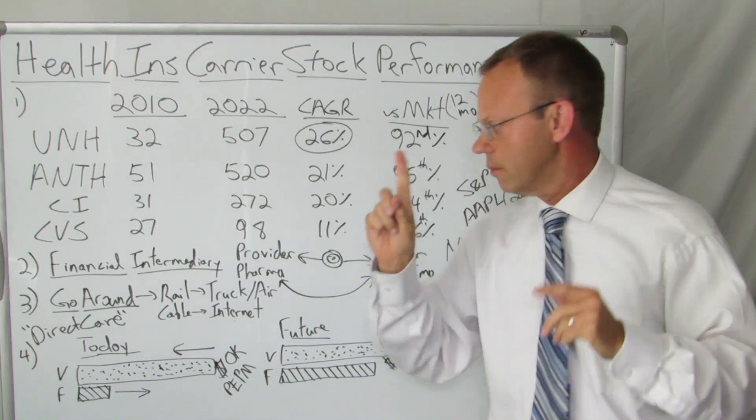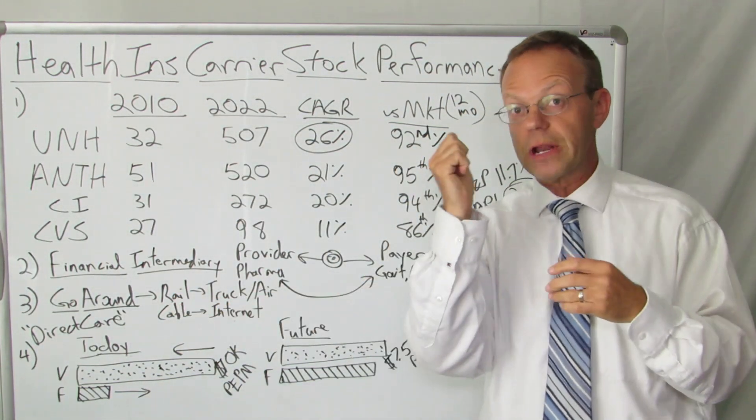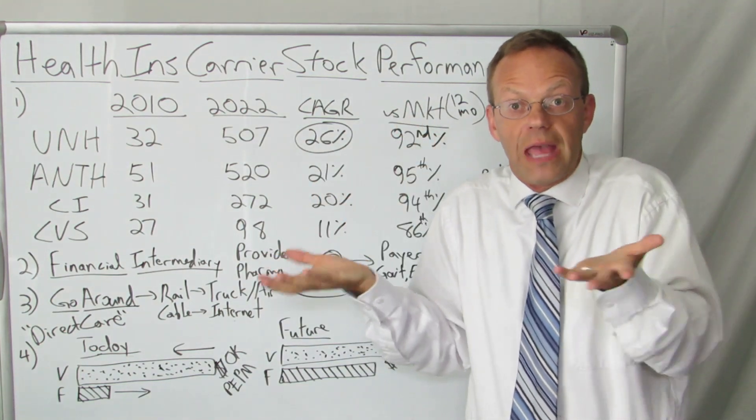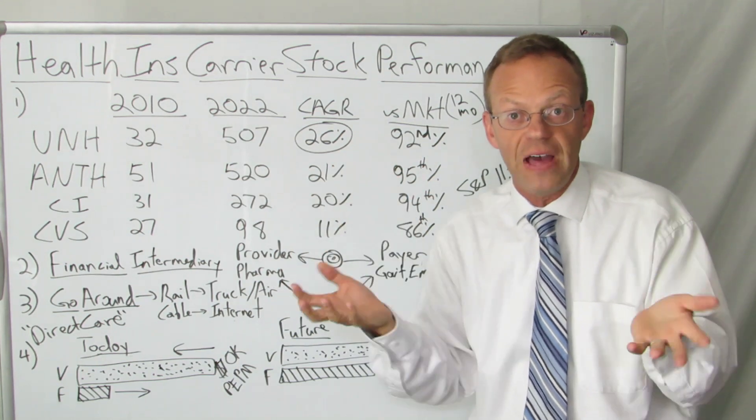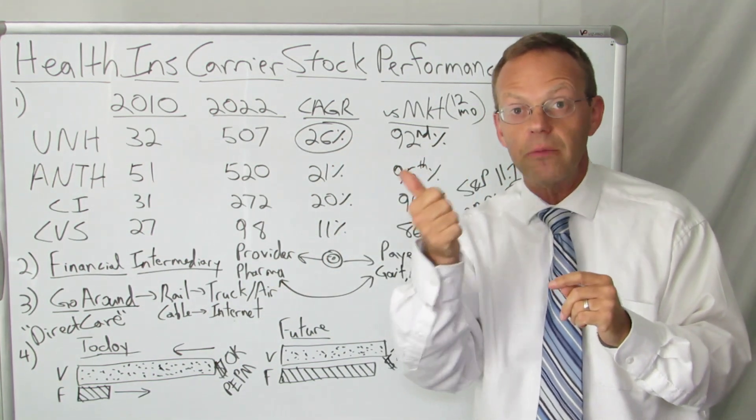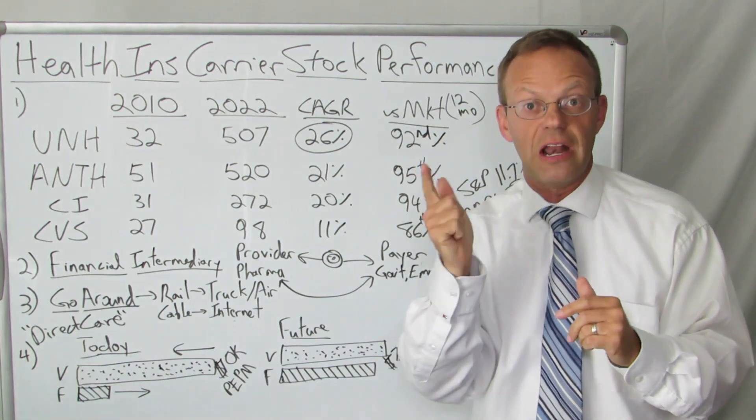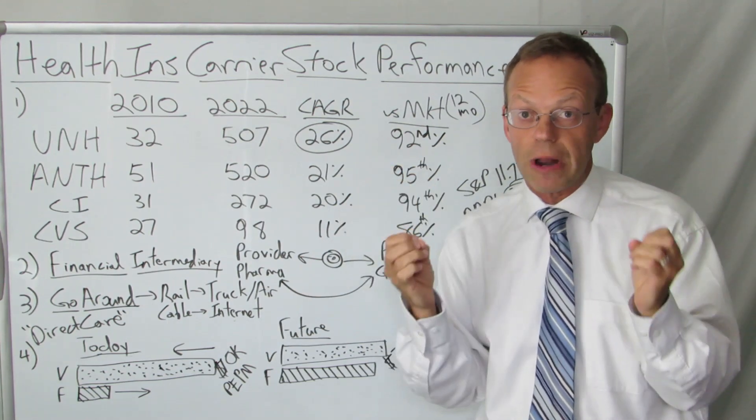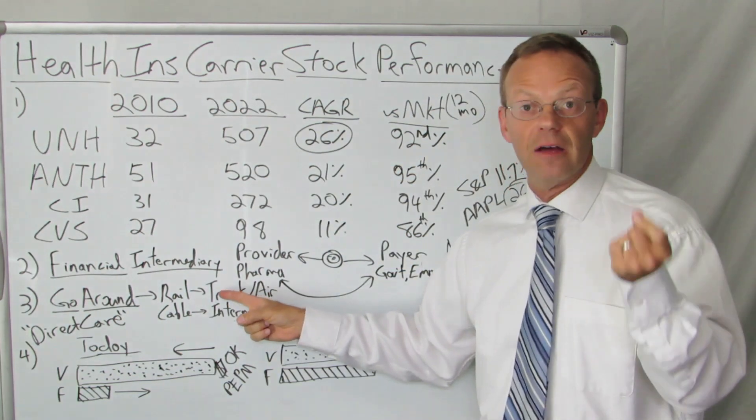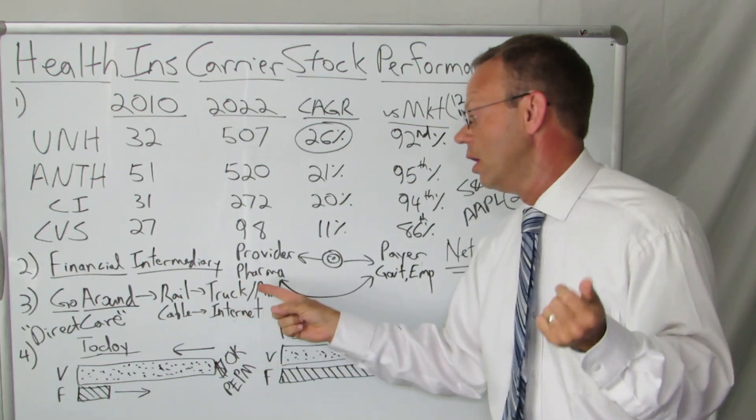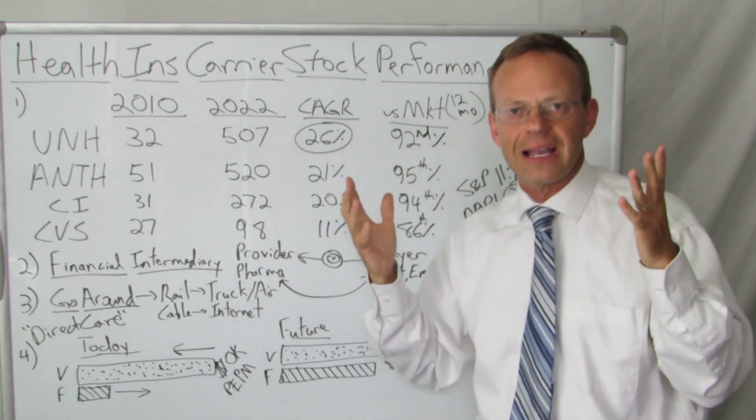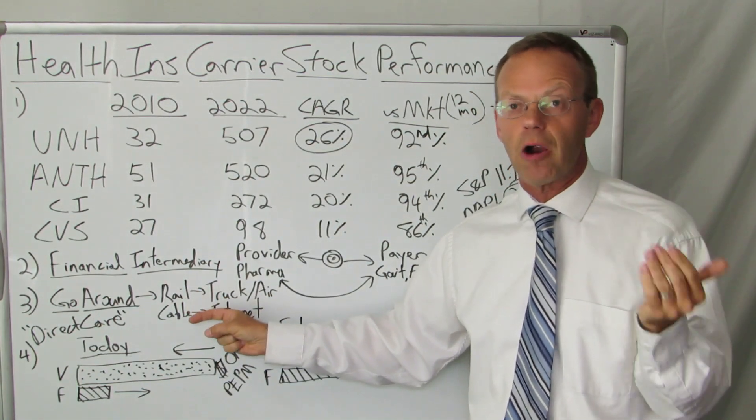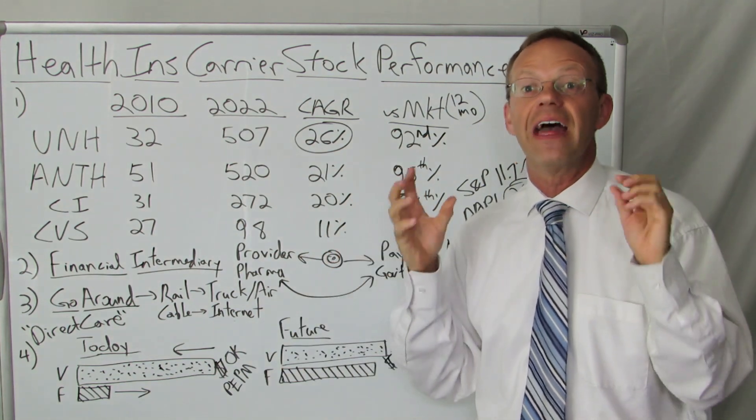Let me give you some examples of network effect industries where they were essentially marginalized because people went around the network. Example number one, the railway system for transporting people and goods. There was a huge network effect because you had to have all the rails connecting all the nodes of the locations. What happened? We built the interstate highway system and we invented the jet airplane. We just simply didn't use the rail networks as much. These railways used to be the largest, most financially powerful companies in America. And today, they are not.